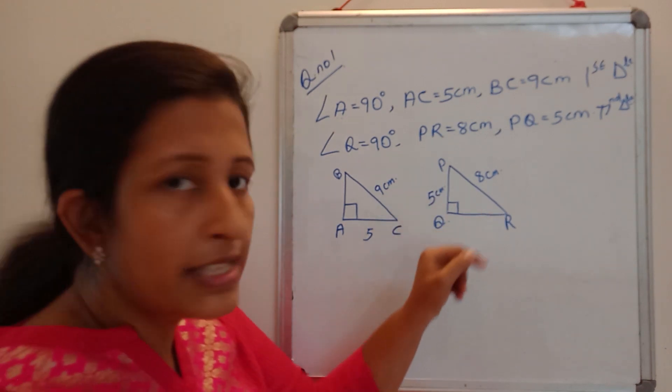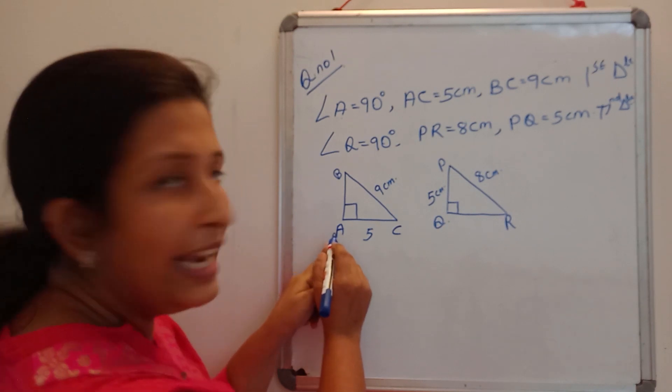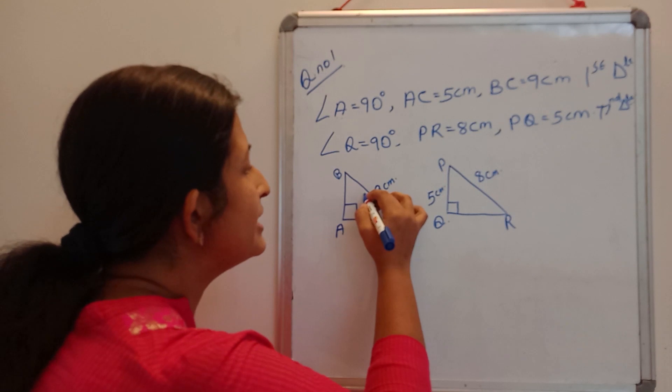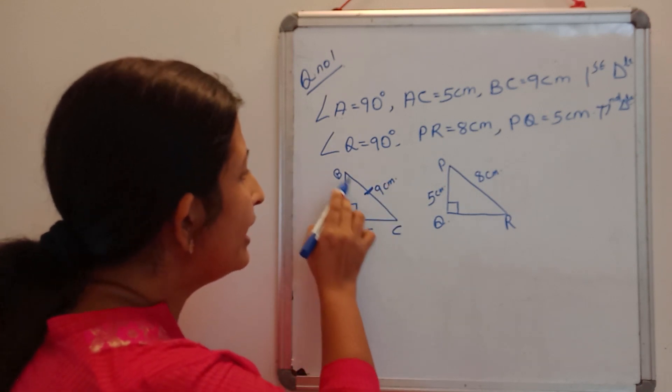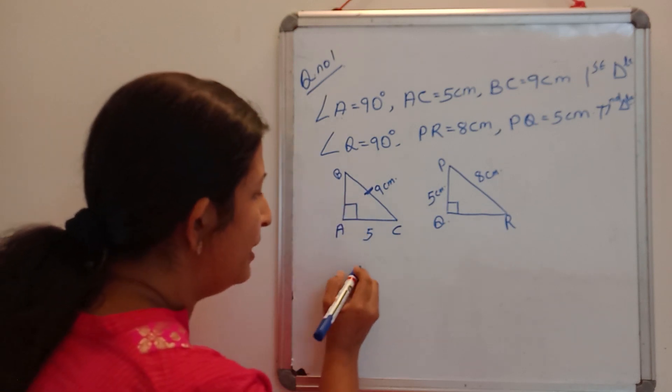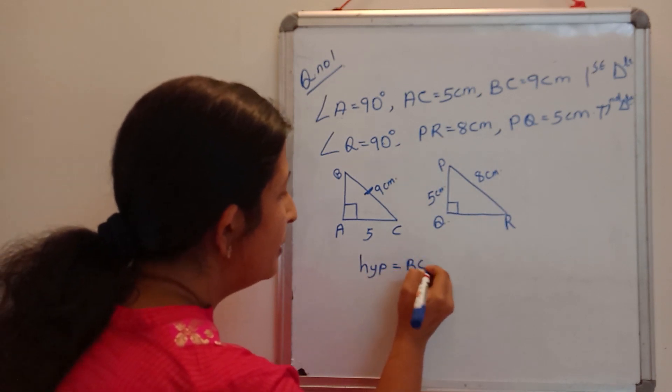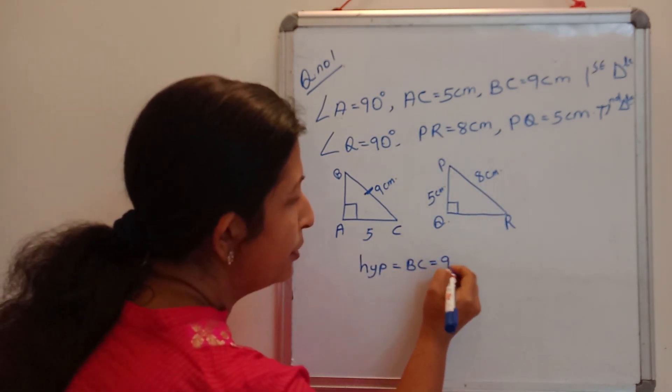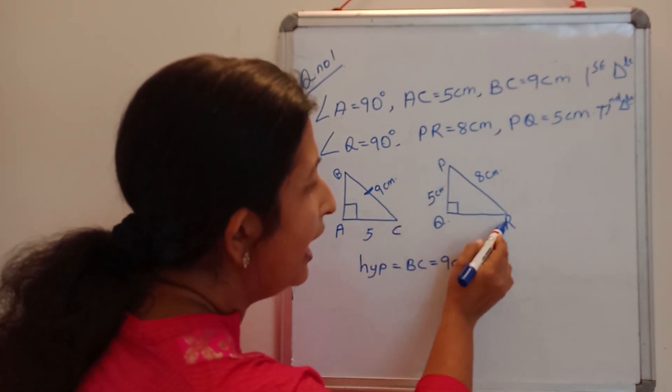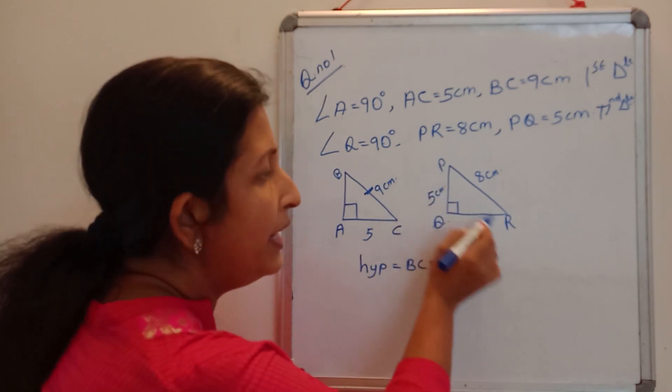From this, are these two triangles congruent or not? See, right angle and the side lies in the opposite of right angle we will call it as hypotenuse. In this triangle BC is the hypotenuse and its value is 9 centimeter. Hypotenuse equal to BC equal to 9 centimeter.